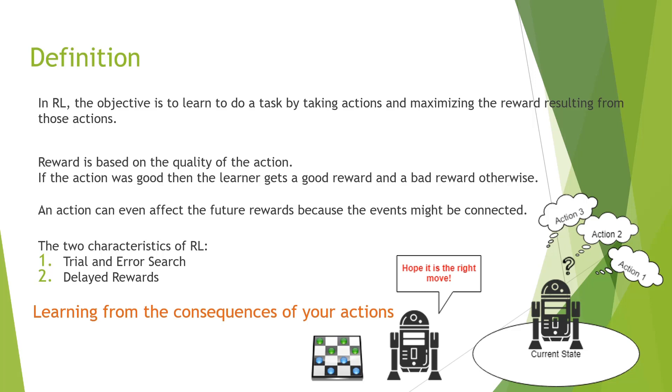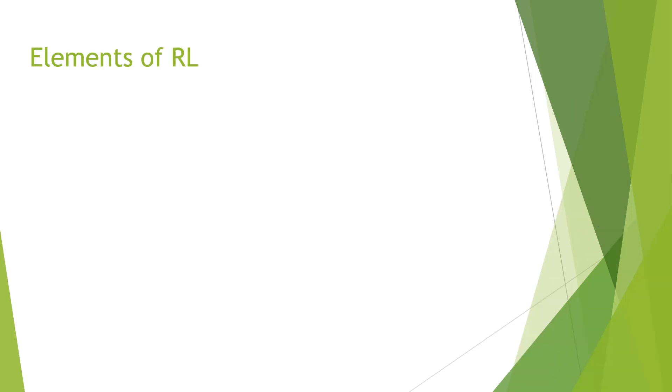So in summary we can say that an RL agent learns from the consequences of its own actions. Let us look at the elements of RL. We know the agent observes the environment, takes an action, and gets a reward for that action. This is very similar to how humans learn.